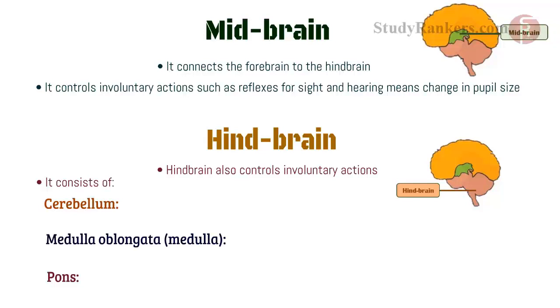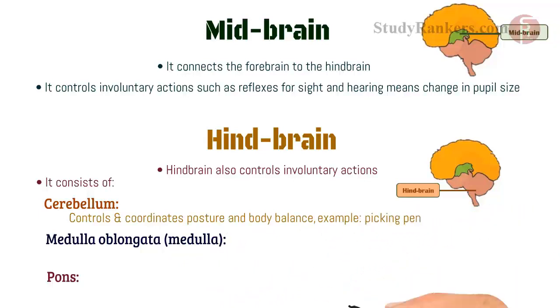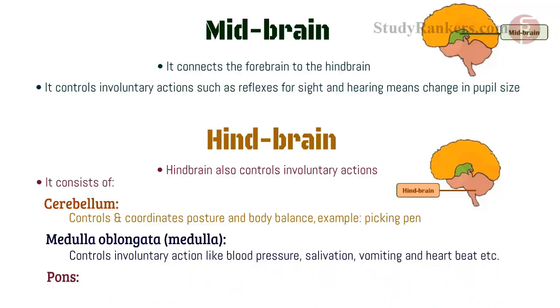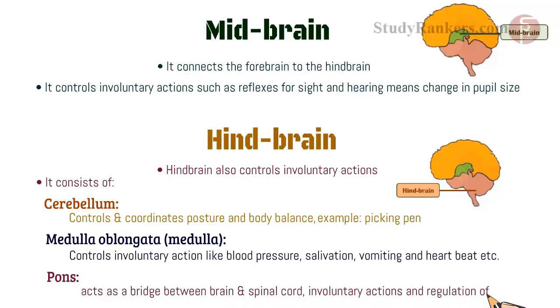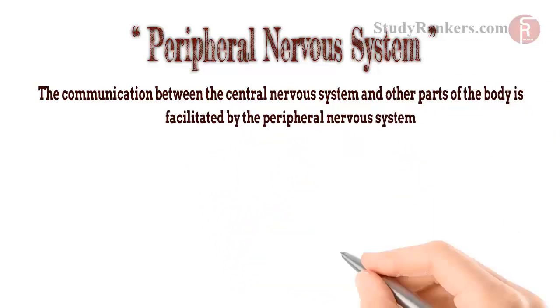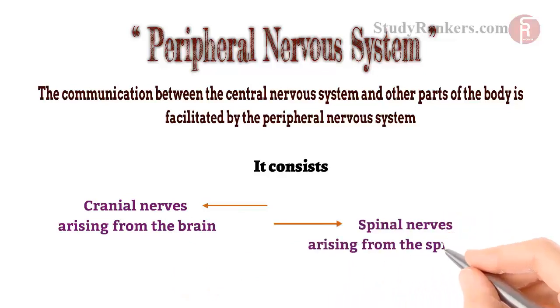The cerebellum controls and coordinates posture and body balance — for example, picking up a pen. The medulla oblongata controls involuntary actions like blood pressure, salivation, vomiting and heartbeat. The pons acts as a bridge between the brain and spinal cord, involved in involuntary actions and regulation of respiration. The peripheral nervous system facilitates communication between the central nervous system and the other parts of the body. It consists of cranial nerves arising from the brain and spinal nerves arising from the spinal cord.